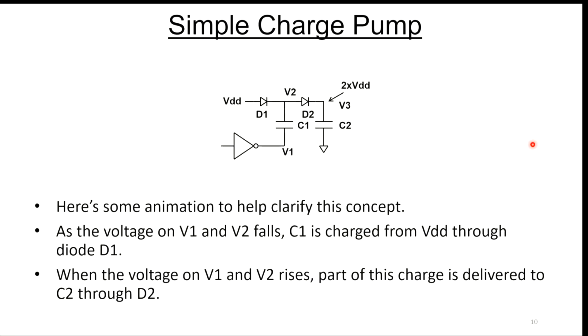Here's some animation to help clarify this concept. As the voltage on V1 and V2 falls, C1 is charged from VDD through diode D1. A little bit of charge goes on the cap. On the next cycle, as V1 and V2 rise, that same charge is pumped to capacitor C2.